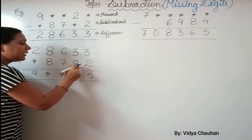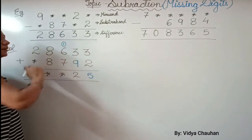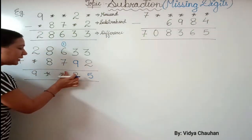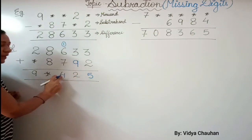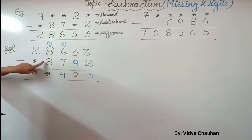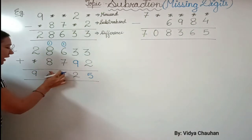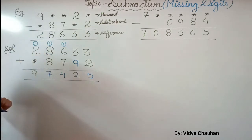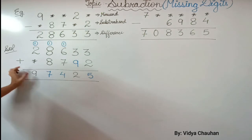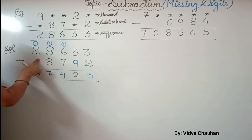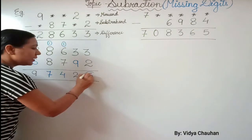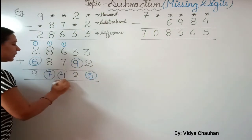Adding 9 to this 3 gives a 2 with 1 as carry forward. Next: 6 plus 1 is 7, then 7 plus 7 is 14 — so 4 goes here and 1 is carry forward. Then 8 plus 1 is 9, and 9 plus 8 is 17 — write 7 here and 1 is carry forward. Last part: 2 plus 1 is 3, but we need 9, so we need 6 more. Adding 6: 6 plus 2 is 8, plus 1 is 9. All missing digits are found!